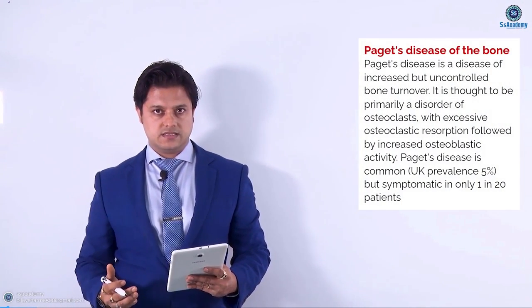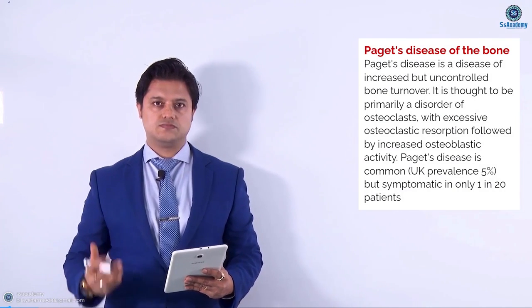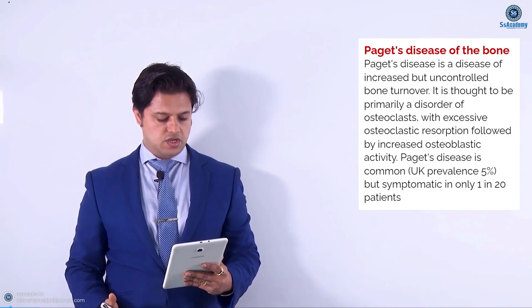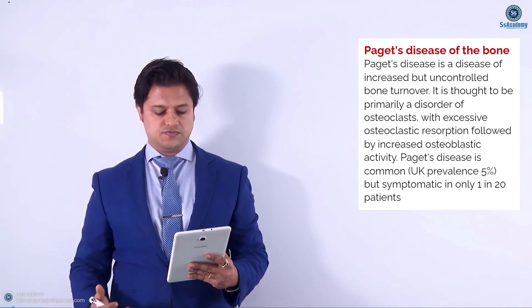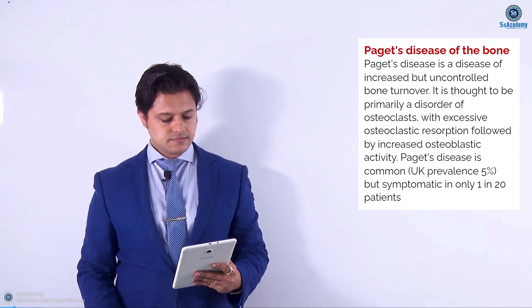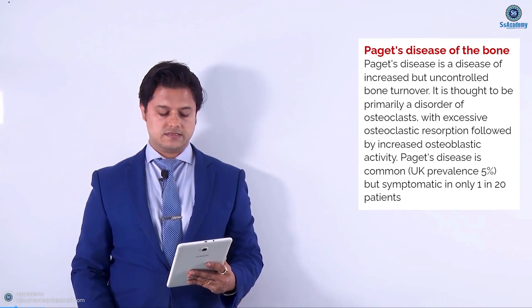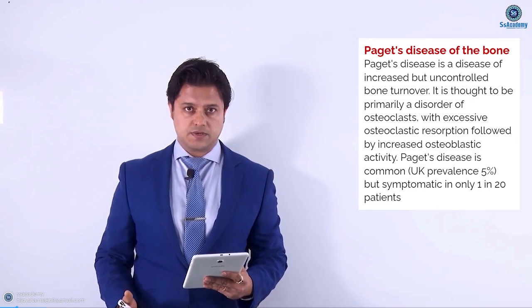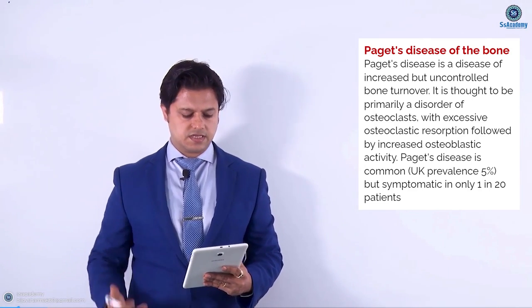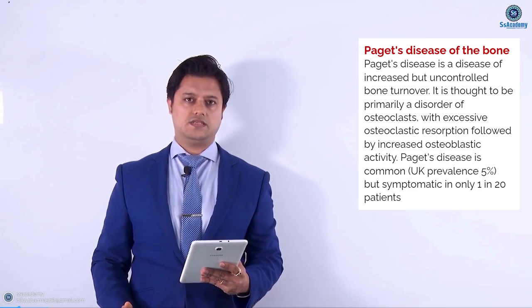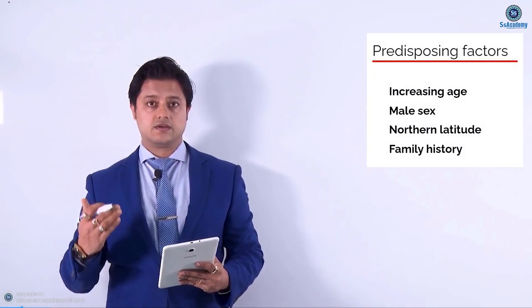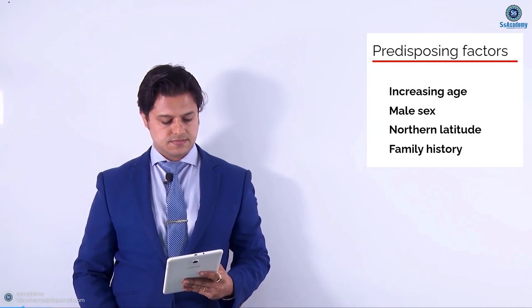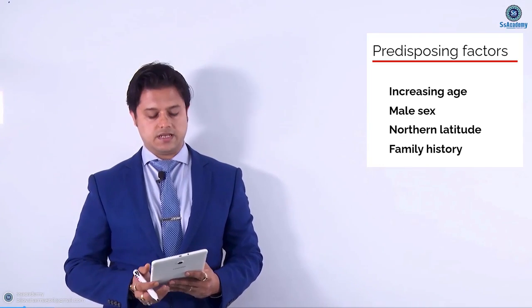Let's start with Paget's disease of the bone - it is a five-star topic. Paget's disease is a disease of increased but uncontrolled bone turnover. It is thought to be primarily a disorder of osteoclasts, with excessive osteoclastic resorption followed by increased osteoblastic activity. Paget's disease is common in the UK - prevalence five percent - but symptomatic in only one in twenty patients. Predisposing factors include increasing age, male sex, northern latitude, and family history.